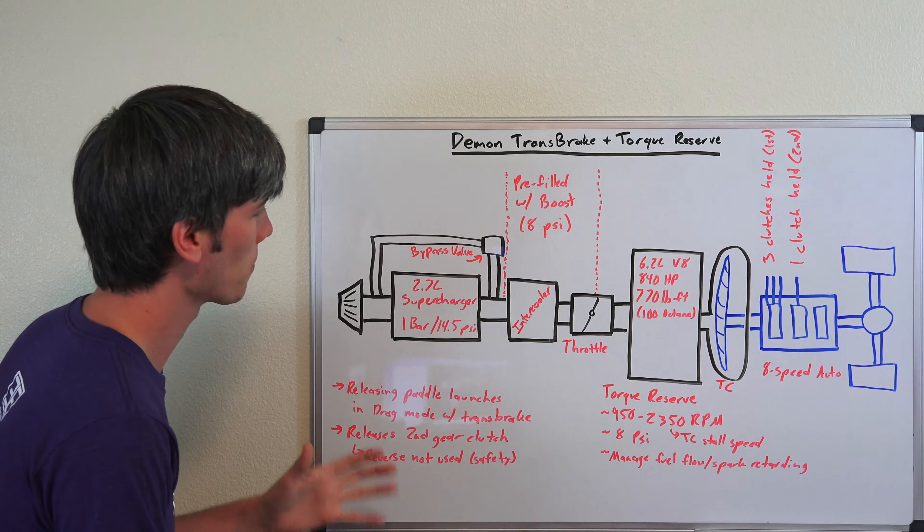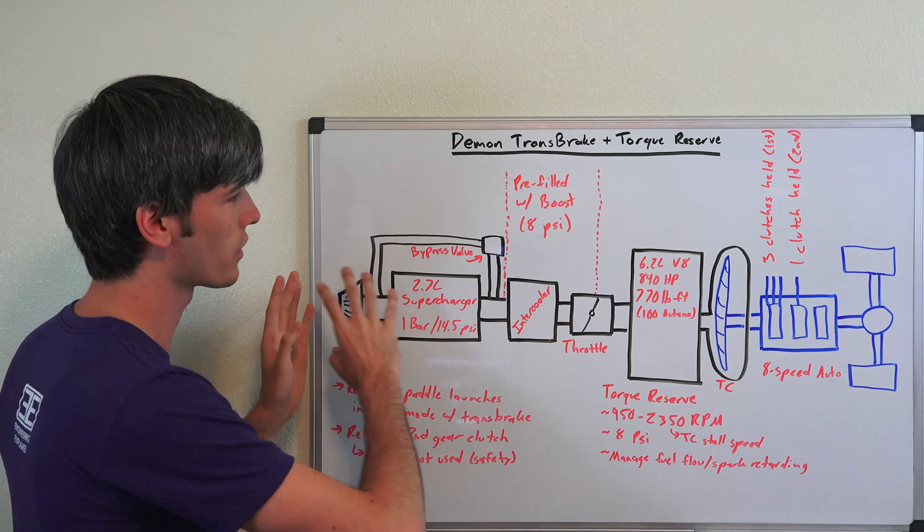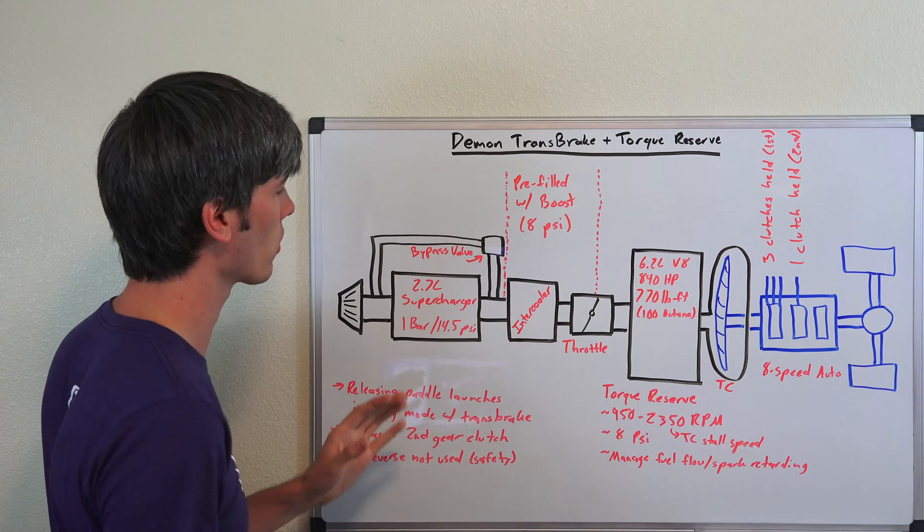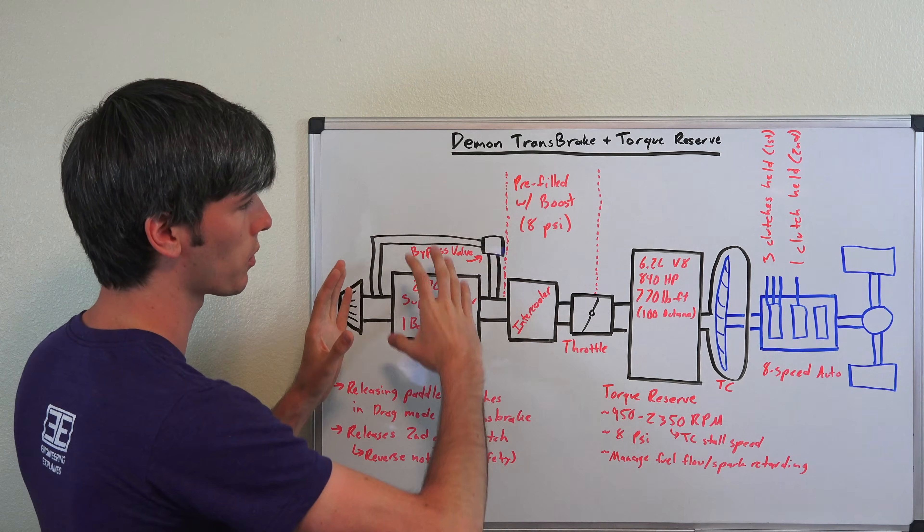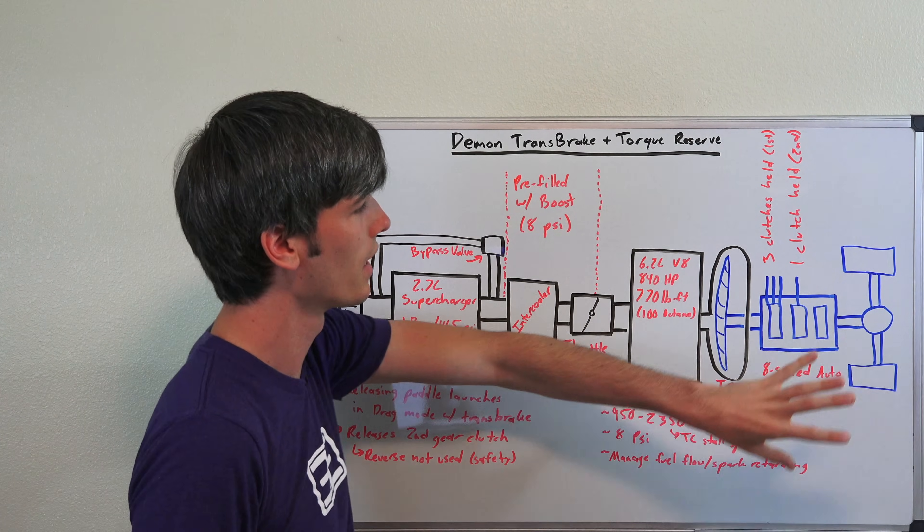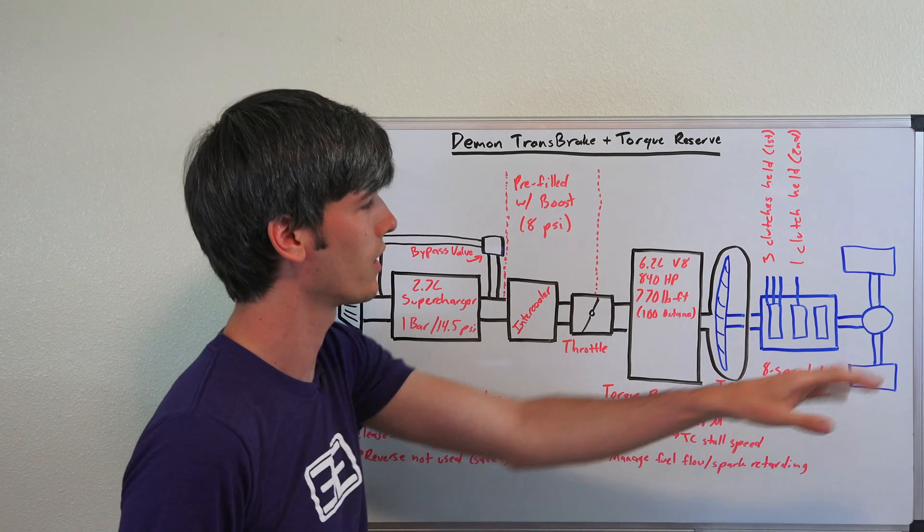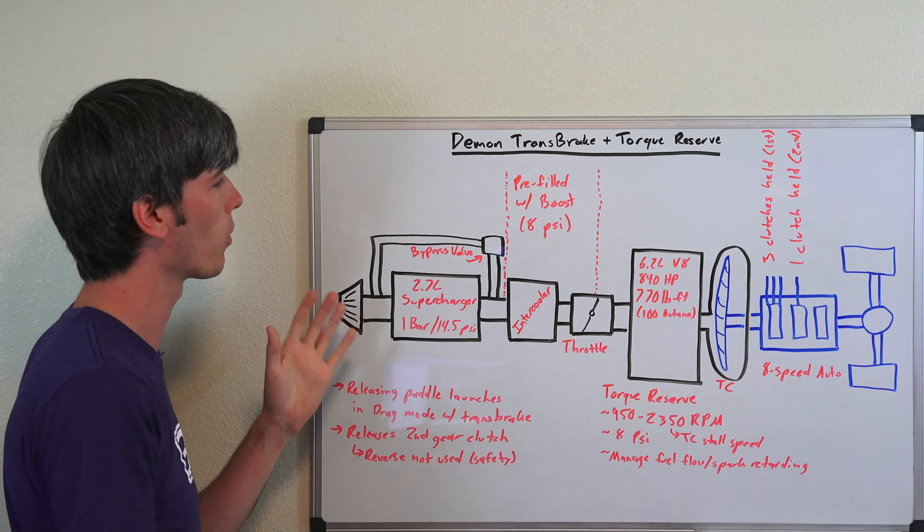So first let's just work through our system here. We have our car starting with the intake leading to our wheels. Up front is more of the torque reserve system, and then towards the back once you get to the transmission we get into the trans brake. So let's just work our way through this flow.